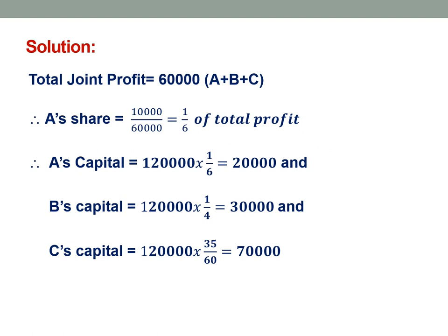The total joint profit of partners is 60,000. Therefore A's capital share is 20,000, B's capital share is 30,000, and C's capital share is 70,000.